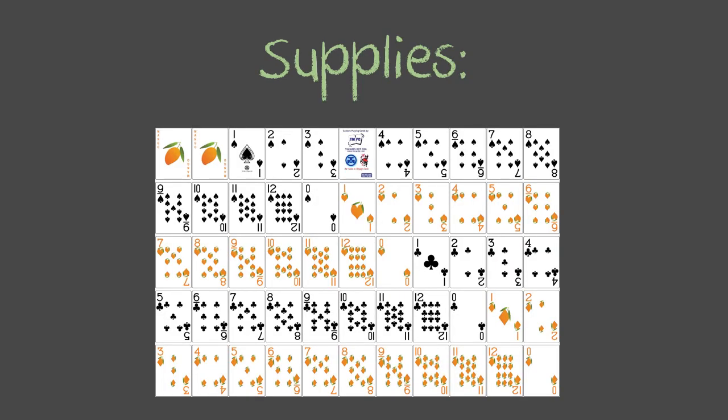The supplies that are provided in the pouch along with the instruction sheet is a deck of cards, 1 through 12 of each suit, actually 0 through 12. These are specially made mango cards. You can do it with a regular deck of cards as well, you just take out the face cards.